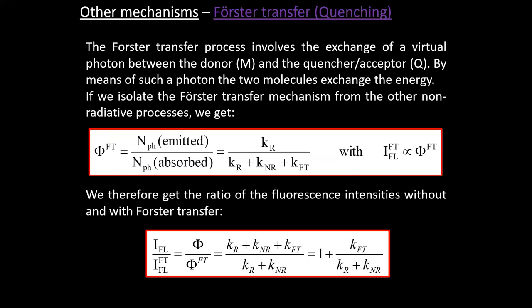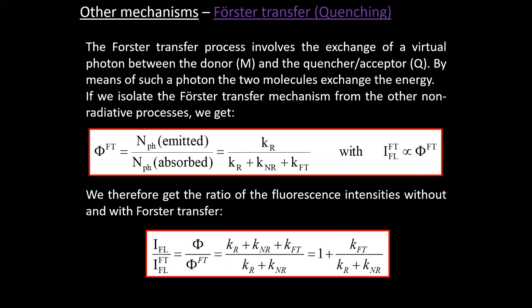Always remember: if you excite a material containing fluorescent molecules, the amount of fluorescence you measure is proportional to the fluorescence quantum yield. If the quantum yield is zero, you measure no fluorescence. The fluorescence intensity also depends on the absorption coefficient of the material at the excitation wavelength, and on the intensity of excitation — more excitation light gives more fluorescence.